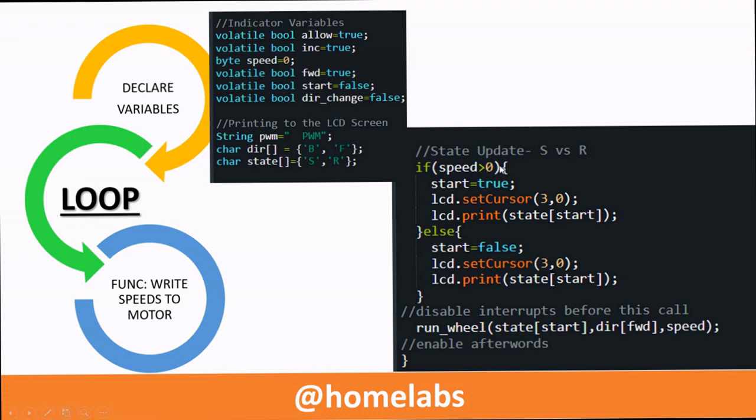In the main loop we have an if loop to update the status of the motor from S to R where S denotes stop and R denotes run. You can see here the call to the run wheel function. If start happens to be true then state of start will be equal to R which means that the motor is in running condition.